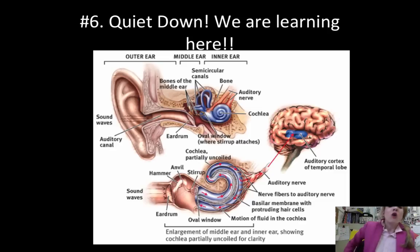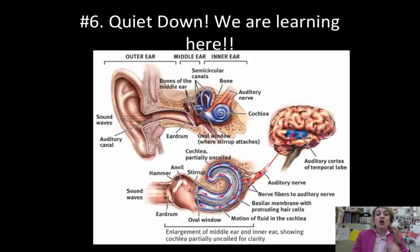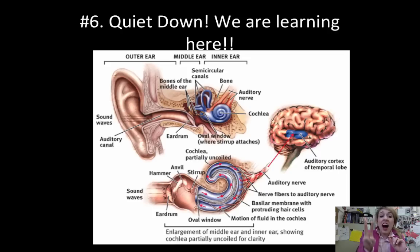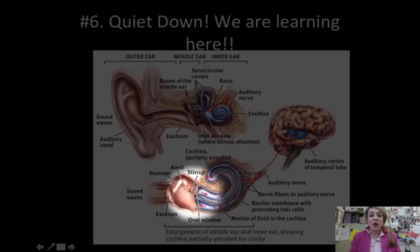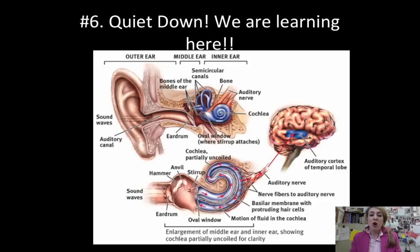Now on to hearing. First you should know the eardrum — it vibrates, and that vibration goes through the bones of the middle ear: the hammer, anvil, and stirrup — the ossicles, the tiniest bones in the body. From there it goes into the cochlea, where the basilar membrane and hair cells (cilia) are located. The cochlea and basilar membrane are the retina of the ear — they are the transduction site, where the magic happens. It then goes to the thalamus and then to the temporal lobe.